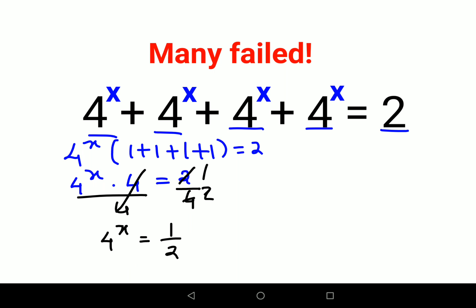Now if you remember, there is a rule in indices where you have 1 upon a. You can take this a on top and it will become raised to minus 1, because here the index was 1. So when you take it on top, the index comes out to be negative 1.